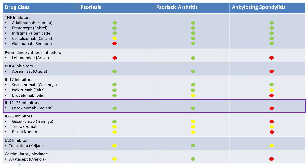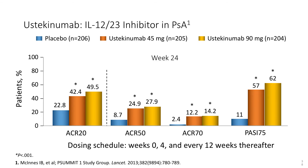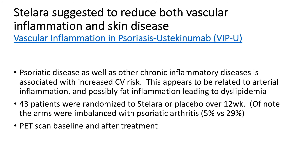IL-12/23 inhibition with ustekinumab is probably more readily used in the psoriasis world. It has Q12-week dosing and some weight-based dosing flexibility, which makes it popular in the dermatology setting. In the joint space we see some efficacy, but probably not as robust as some of our other agents — ACR-20, 50, and 70, as well as about 60% PASI-75. Its advantages are the Q12-week dosing schedule and its low side effect profile.